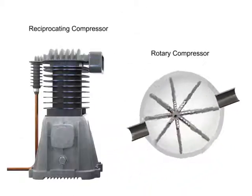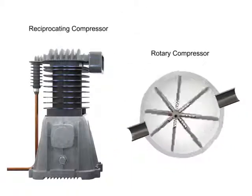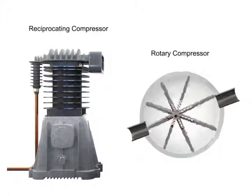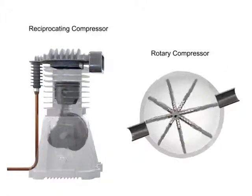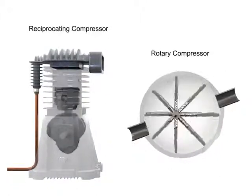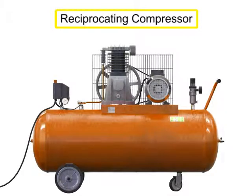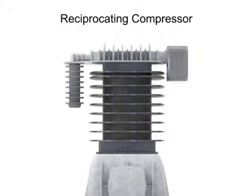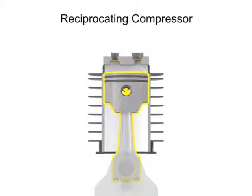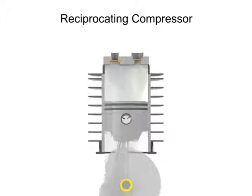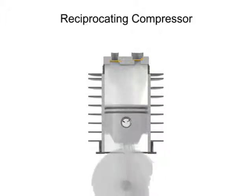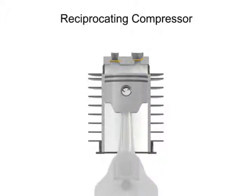Rotary compressors are typically free of the vibration and pulsation that occurs with reciprocating compressors. A typical reciprocating compressor consists of a housing with an internal piston connected to a crankshaft. As the crankshaft turns, a piston reciprocates within the cylindrical housing. There are two valves at the head of the cylinder, an inlet and an outlet.